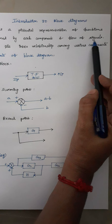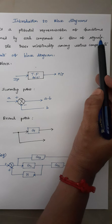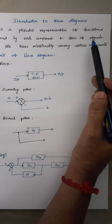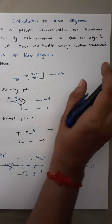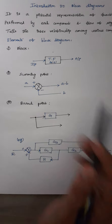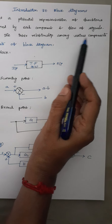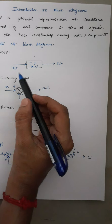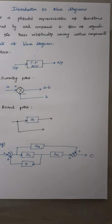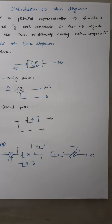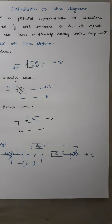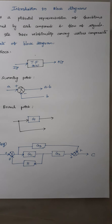Flow of signals are indicated by means of arrowheads. Flow of signals are nothing but input signal and the corresponding output signal. Apart from that, this block diagram also tells the interrelationship among various components. For example, if a system consists of four blocks, there should be some connection between those four blocks. So that is known as interrelationship, and that interrelationship is explained by means of this block diagram.